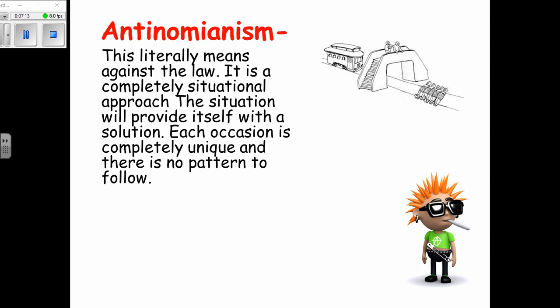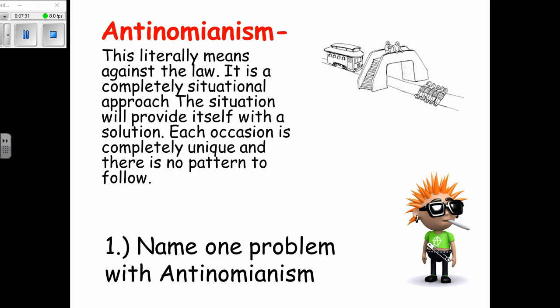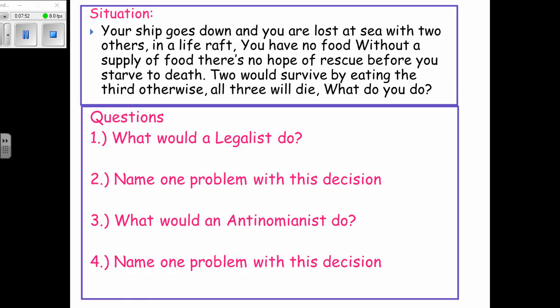Anti-nomianism means against the law — a completely situational approach where you don't follow rules but do what the situation seems to suggest. Each situation is completely unique; there is no pattern to follow. However, big problems with anti-nomianism are that it seems completely unprincipled — you can do pretty much anything — and it doesn't even seem like morality at all.